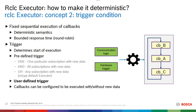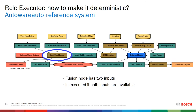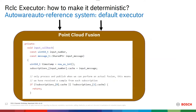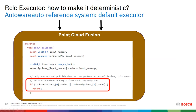Furthermore, you can have a user-defined trigger with more complex logic. Given this fusion node example — a point cloud fusion node with two input messages — it shall be executed only if both inputs are available. Looking at the source code of this point cloud fusion node, there is a condition checking if the data has been cached locally. Whenever the callback is called, it takes the message, puts it into an internal cache, and then checks the activation condition for the entire node to decide whether to proceed.